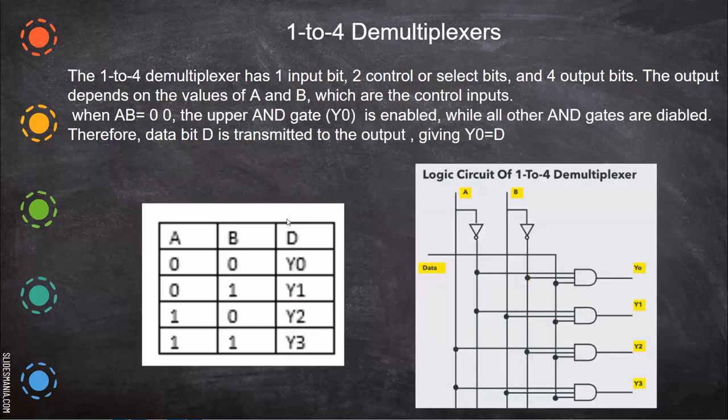Now we'll see an example, 1-to-4 demultiplexer. It has one input. The data line is one. Depending upon the input, the output will be selected. It has four output bits. The output depends on the values of A and B, which are the two control lines, or select outputs.